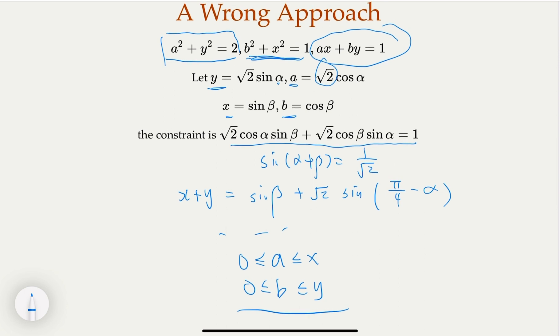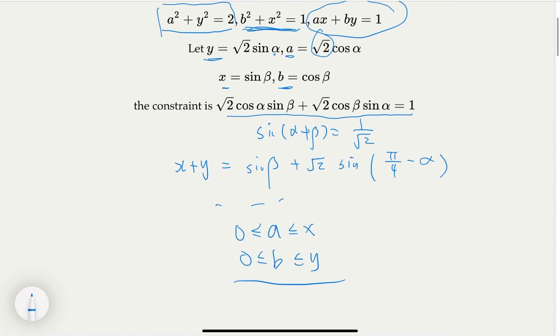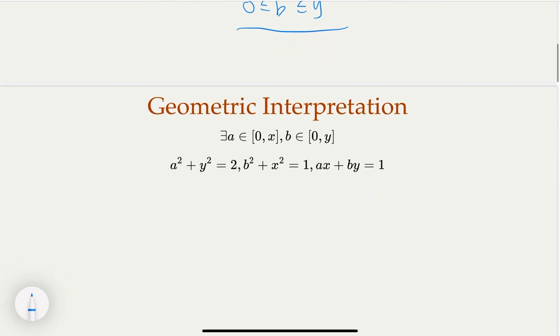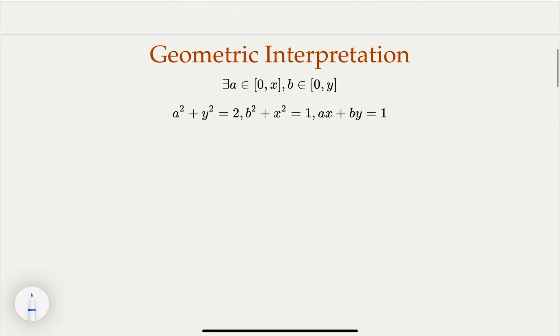Or if you add this constraint in, your algebra will become messy. So here, geometry comes to rescue. Let's look at this geometric interpretation of this constraint. Given that a is bounded by x, b is bounded by y.